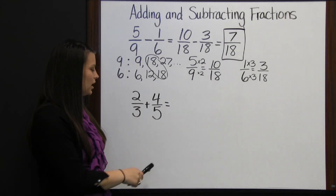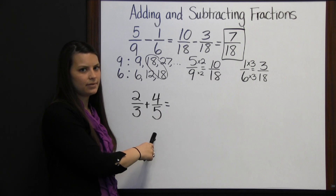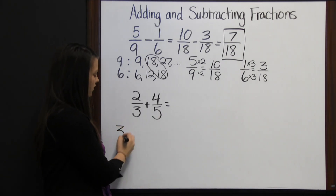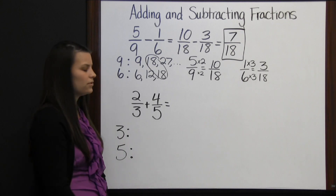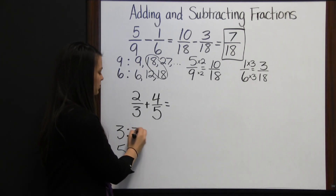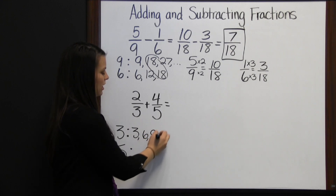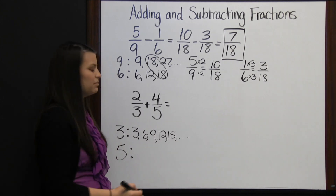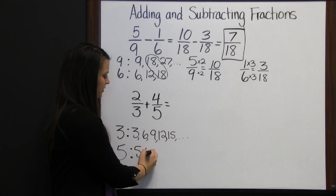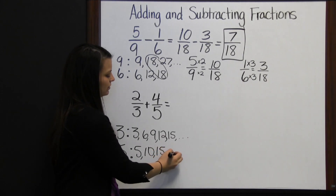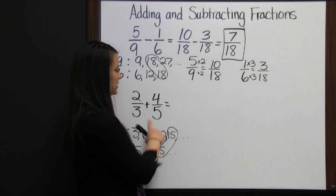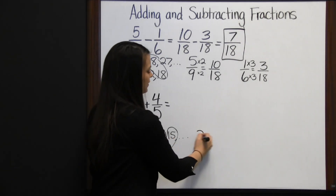Let's look at an addition problem. We need to find the least common denominator for 3 and 5, which means finding the least common multiple. Listing the multiples: 3, 6, 9, 12, 15, and for 5: 5, 10, 15. So the least common multiple is 15, which means I'm going to change both denominators to something over 15.